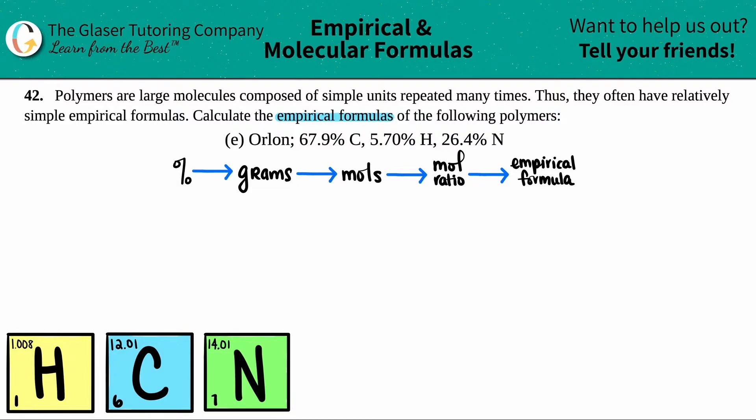The first thing I'm going to do is just write down our percents on the left side here. So I have 67.9% carbon, I have 5.70% hydrogen, and then I have 26.4% nitrogen. Now, all we have to do here is just find out from the percents how many grams I have. The first thing I would do is just make sure that your total is out of 100%. So if I have 67.9% plus 5.7% plus 26.4%, yeah, I get 100%. So no percentages are lost here.